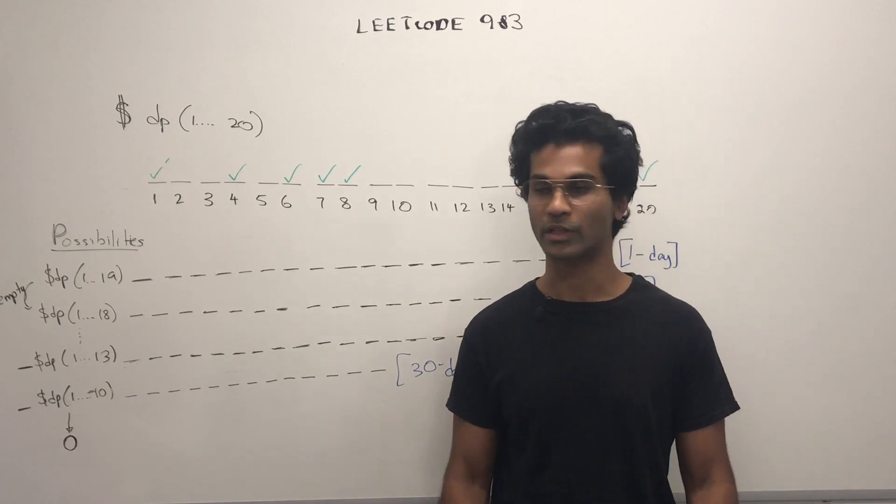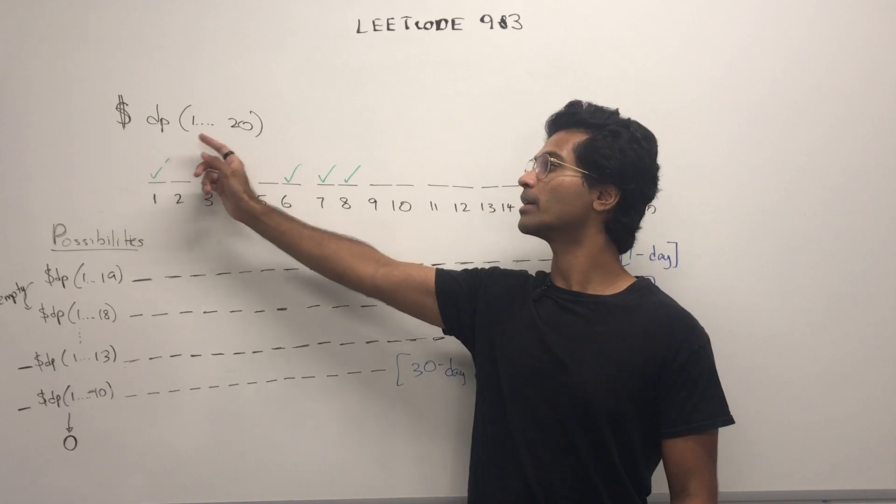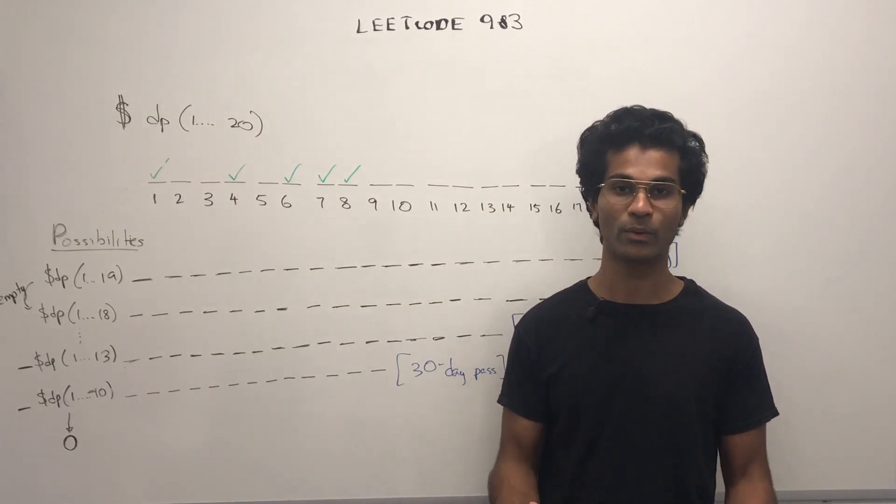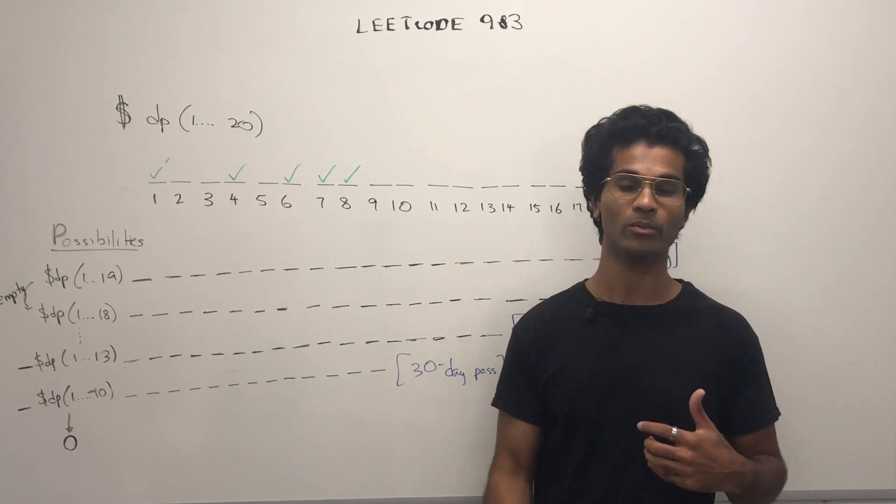First, let's write an expression. This represents the minimum cost, using dynamic programming, to cover the range of days between 1 and 20. Of course, we're not traveling every one of those days, but we're going to use it to create our sub-problems.